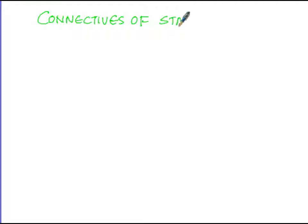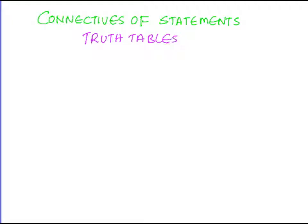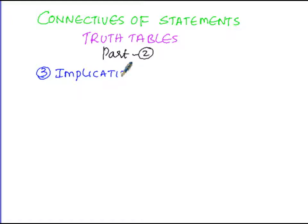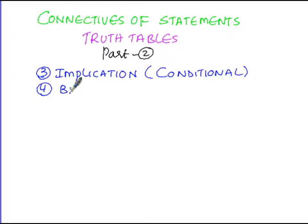Here we are going to discuss about the connectives of statements and their truth tables, part two. Under part two, we are going to discuss the remaining two connectives: the third one, which is the implication or conditional, and the fourth connective, the bi-implication, otherwise called the bi-conditional.